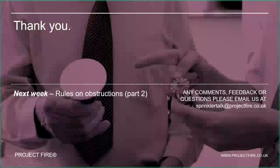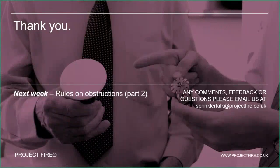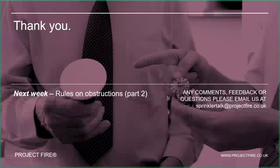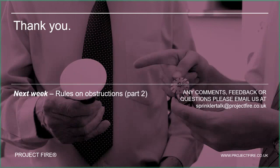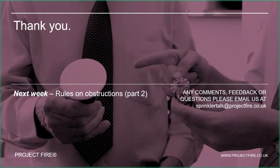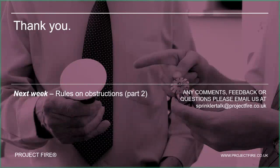That's it for this week — a slightly shorter one. In part two next week, we'll be looking at other obstructions: ducts, cable trays, walkways, and whether to place sprinkler heads above or below them using simple rules. If you found this useful, join me again for part two. As always, I'll hang on a few minutes for any questions in the chat. Hope you have a good week — catch you next time!